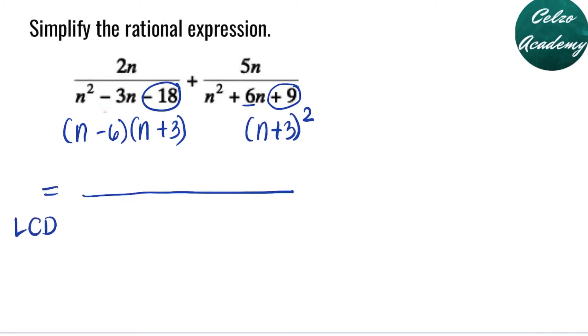Now, let's find the least common denominator using those factored forms. What do you think is the LCD for this problem? First, we have n minus 6. Next, we have n plus 3. But on the right side, we have n plus 3 to the second power. So that means we need to write n plus 3 times n plus 3 or the same thing as n plus 3 to the second power.